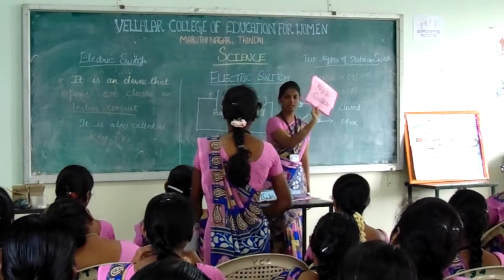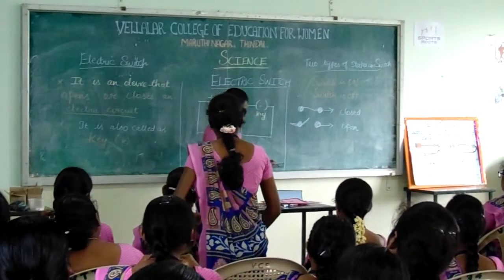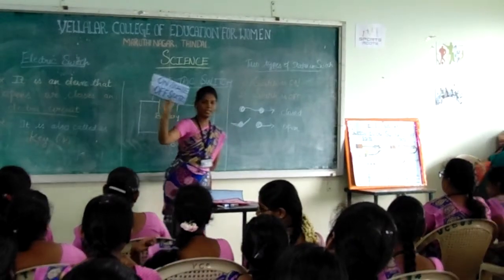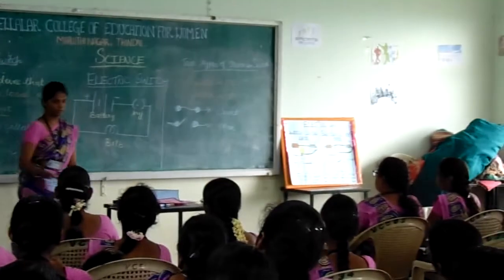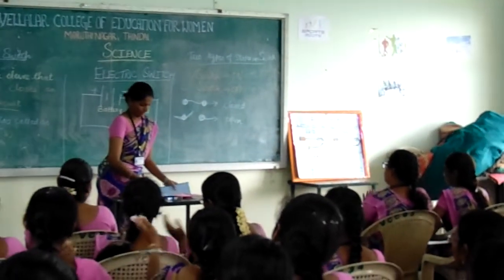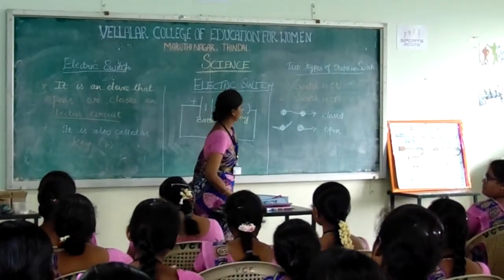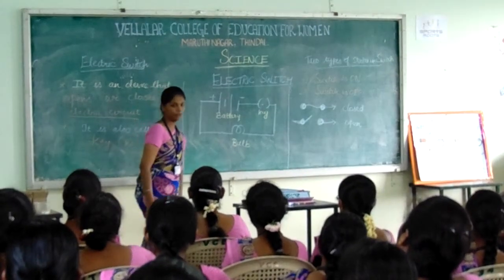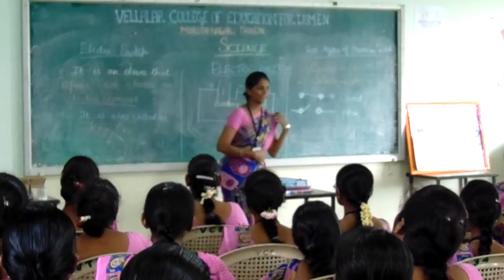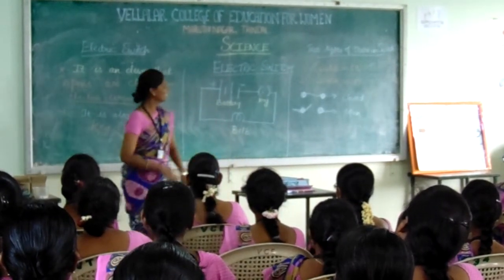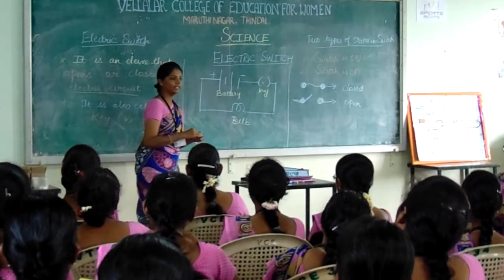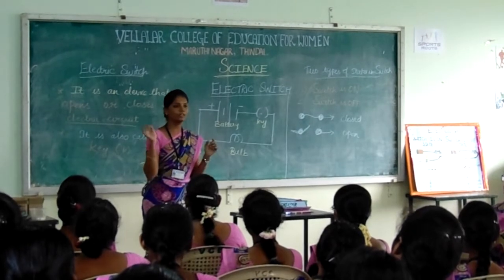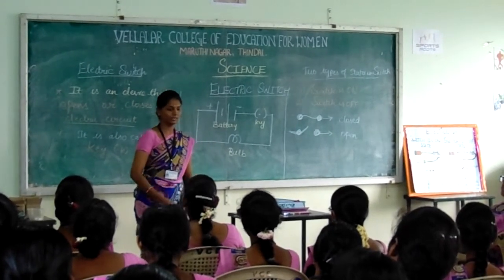Key is closed — so key is closed means two states in a switch. What are the two states in a switch? Switching on state and switching off state — very good. So students, we have discussed about the electric switch today. Tomorrow we are going to see about the electric fuse. Now it is time for your assignment. Tomorrow your assignment will be on the board — you have to find the switches which you see in your home and write examples for them. Thank you, students.